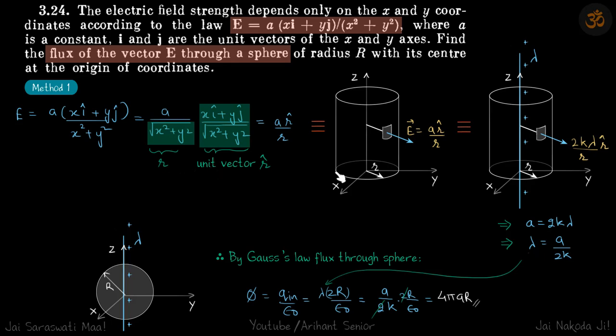This I can write as r in the cylindrical coordinates. If this is x, this y, for any point on this cylinder this r is root of x square plus y square. And x i cap plus y j cap upon root of x square plus y square is r cap, which is a unit vector in its direction.